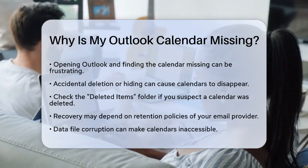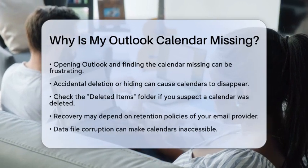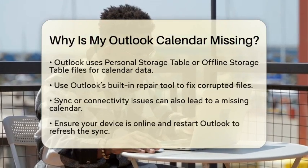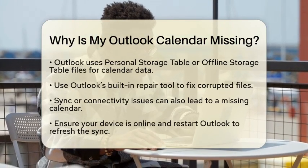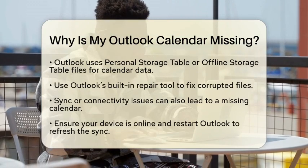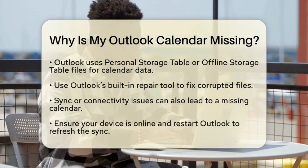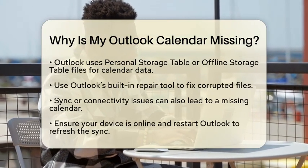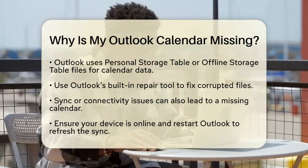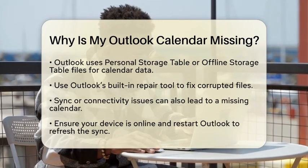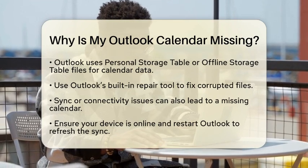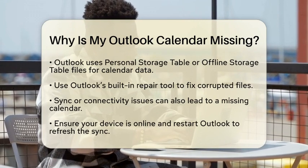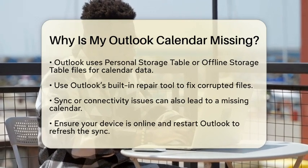Next, data file corruption could be a culprit. Outlook stores calendar data in personal storage table files (PST) or offline storage table files (OST). Corruption in these files can happen due to abrupt shutdowns or sync errors, making your calendars inaccessible. To fix this, you can use Outlook's built-in repair tool, which can scan and repair corrupted files. If you are using a cloud-based account like Outlook.com, re-syncing your account might help restore access to your calendar.